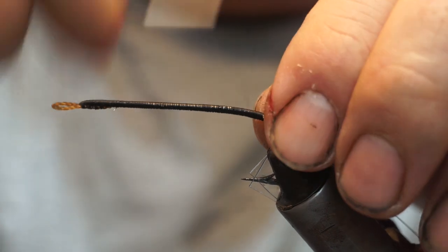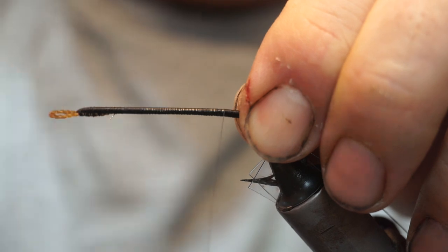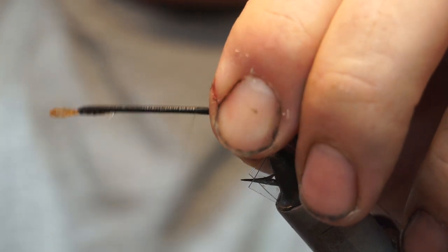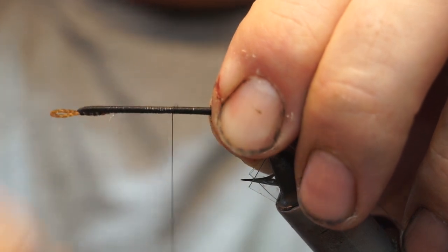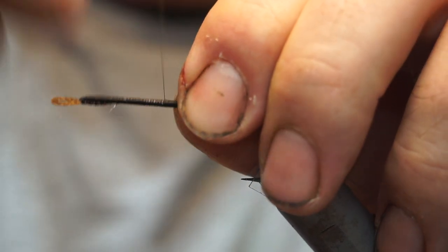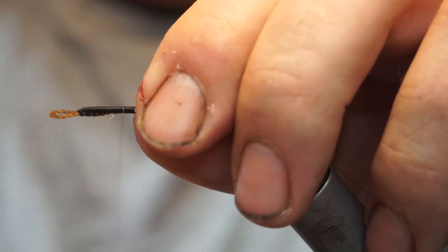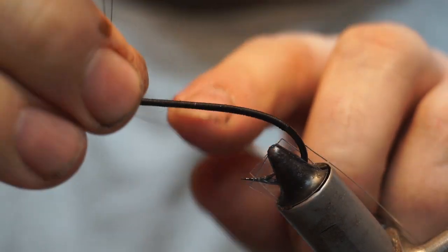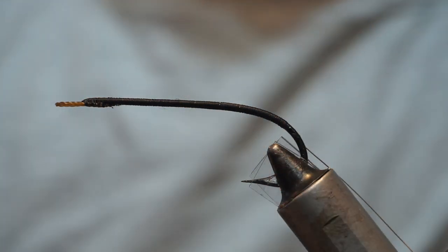I'm going to take my tying thread then up across the body again, and here we're just trying to create a nice smooth underbody. Because when you're wrapping flosses and silks, whatever is underneath is going to show through, so it's important to try and get it as neat as possible.